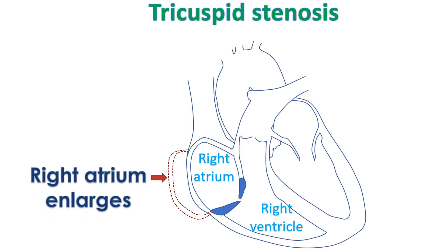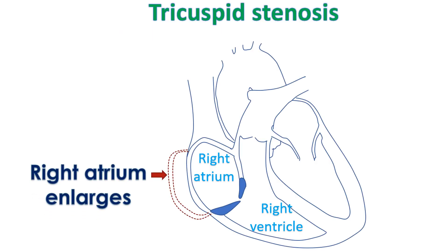When the tricuspid valve is narrowed, the right atrium finds it difficult to empty blood into the right ventricle. The right atrium enlarges and thickens to accommodate the extra blood which pools up. Back pressure is also transmitted to the great veins from which the right atrium receives blood.